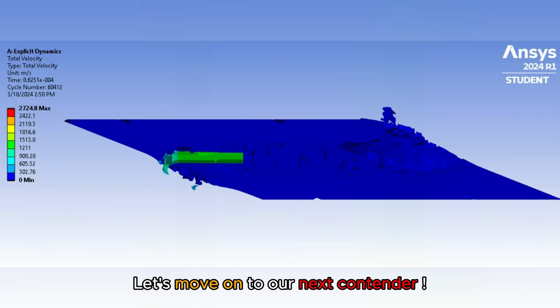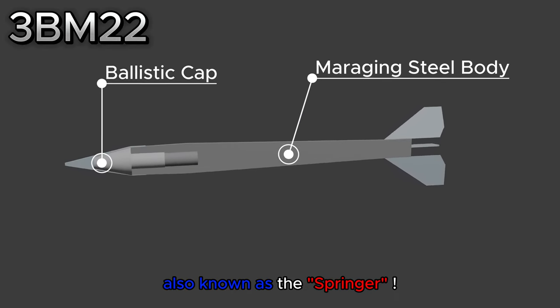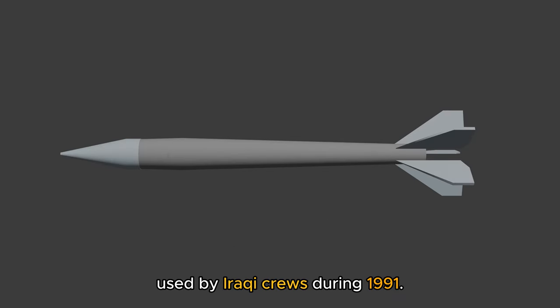Let's move on to our next contender. This is the 3BM-22, also known as the Springer. It was a primary armor-piercing ammunition used by Iraqi crews during 1991.